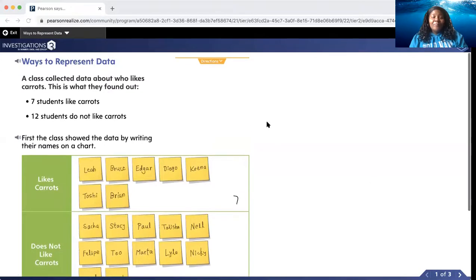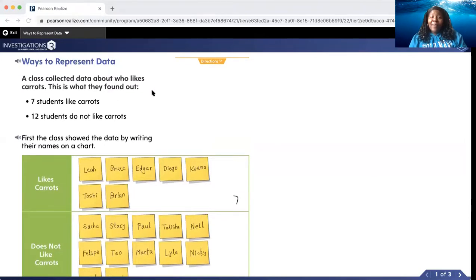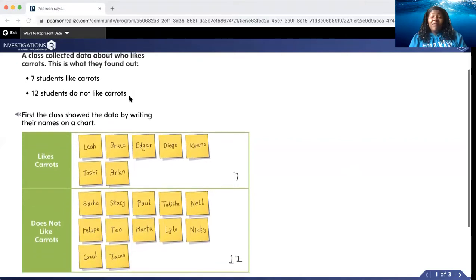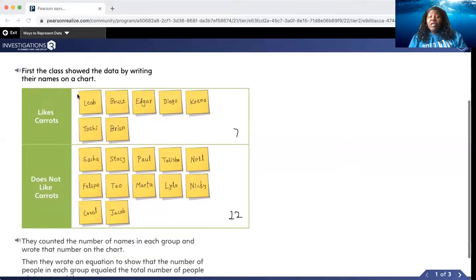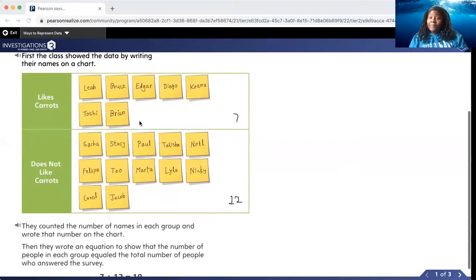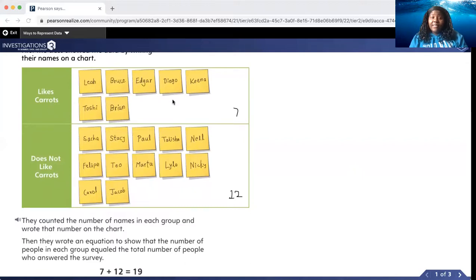So here a class collected data about who likes carrots and this is what they found out. Seven of their classmates like carrots. Twelve students do not like carrots, and so here they show the data by writing their names on a chart. So here if you liked carrots their names are here. Seven classmates like carrots. The students who do not like carrots wrote their name here and there's twelve of those students.